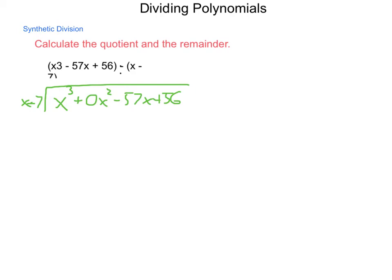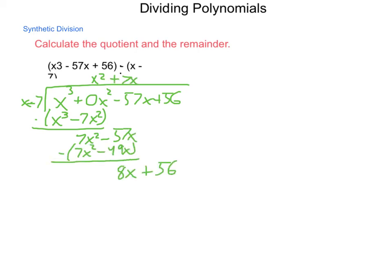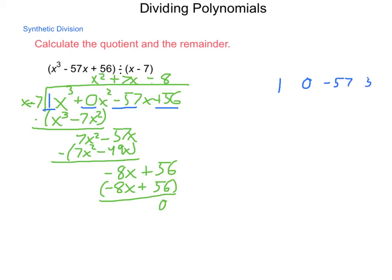And, going through the process and speeding it up a little bit here, we'll leave us with x² + 7x - 8 and a remainder of 0. Now, there's a process known as synthetic division where we can speed this up. In synthetic division, all we primarily care about are the coefficients that exist in this problem. So, if I were to pull out those coefficients, 1, 0, -57, and 56. And then, what does it take to make our divisor 0? The answer there is 7.